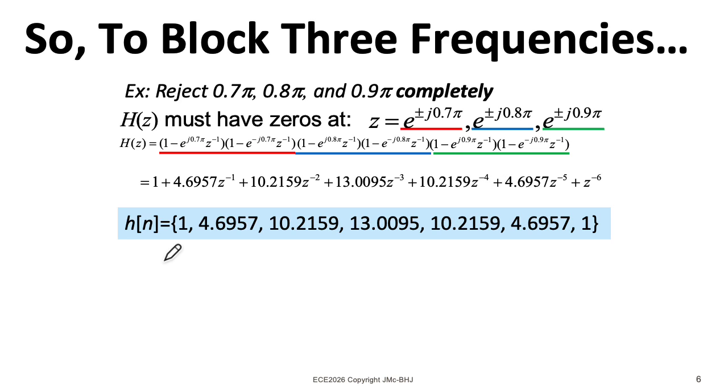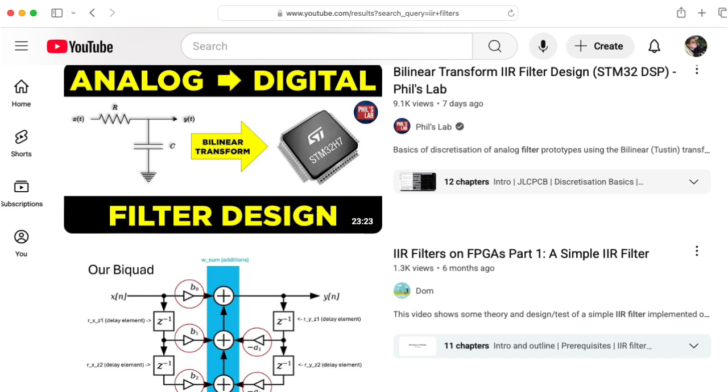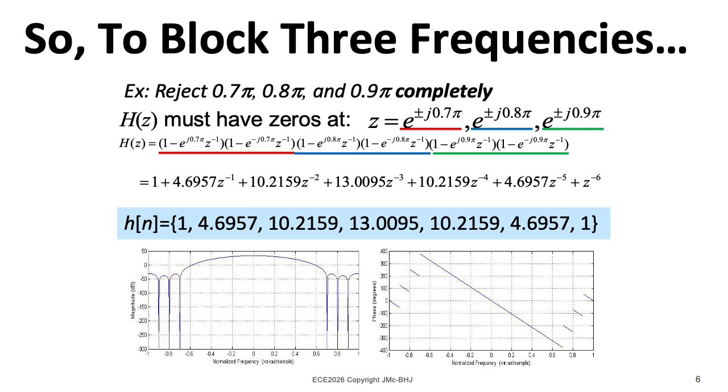Recall that for FIR filters, there's this direct correspondence between the impulse response and the filter coefficients. And that's not true for the infinite impulse response filters we'll look at later. So when we plot the magnitude response, it looks like this.